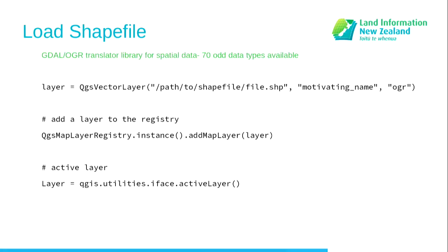This was just a quick run through to give you a broad overview of what's happening when you interact with it. First up — loading layers. It's based on the GDAL/OGR translator library, so there are 70 to 80 odd data types you can take in. It's nicer than proprietary in some ways because they've tried to expose a whole lot of stuff rather than forcing you to use what they want.